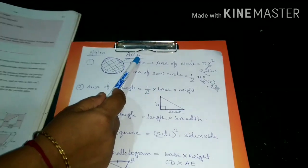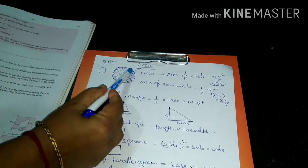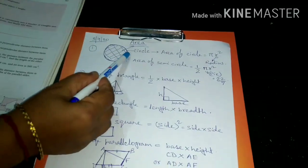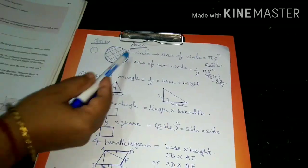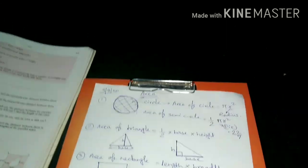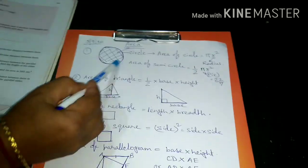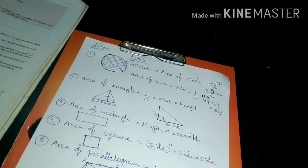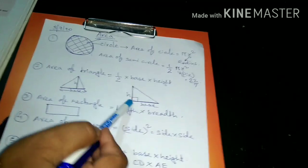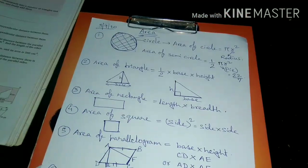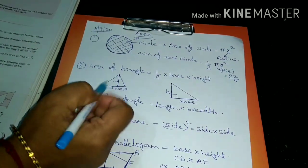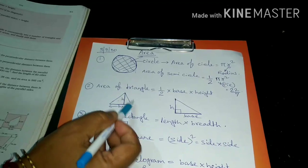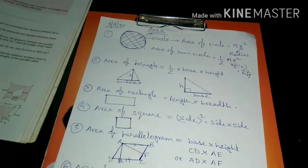So what is area? Area means the region enclosed by a curved plane. Suppose if I take one circle — circle is a plane. This region covered by this circle is called the area of the circle. Similarly, for a triangle, the region which it is enclosed by a plane surface is called the area.